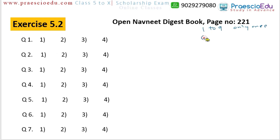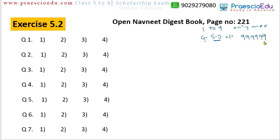First of all, the greatest 6-digit number — and it should be odd. We know the greatest 6-digit number is 9,9,9,9,9,9. Since it ends in 9, it is already odd, so there is no problem maintaining this one.